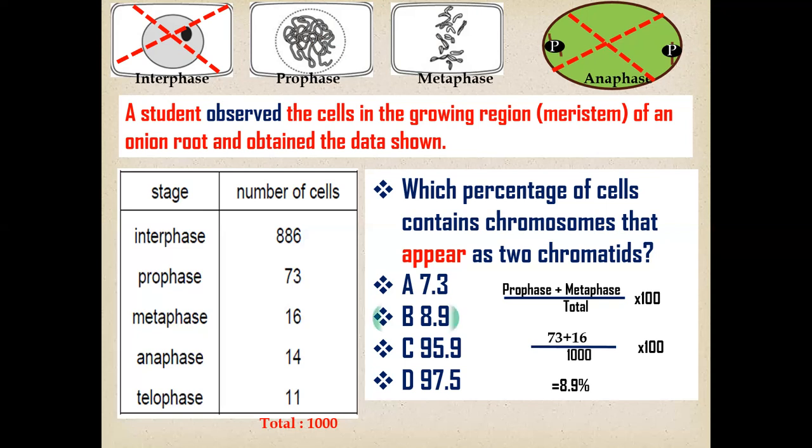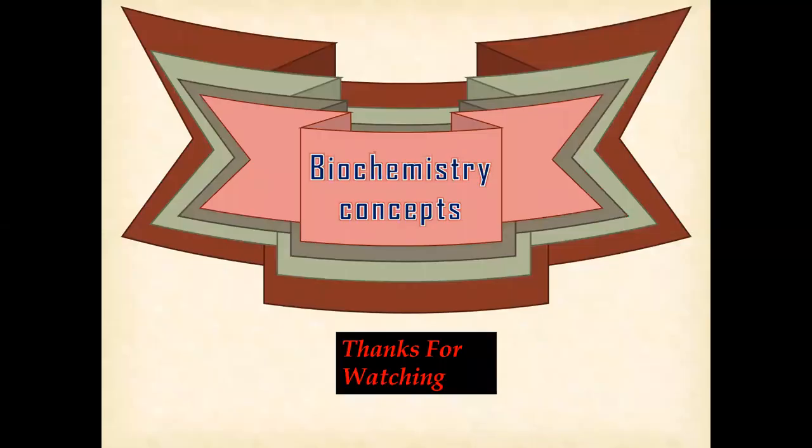So 8.9% of cells are in the condition in which the chromosomes contain 2-chromatids. Hope you get an idea. Thank you.